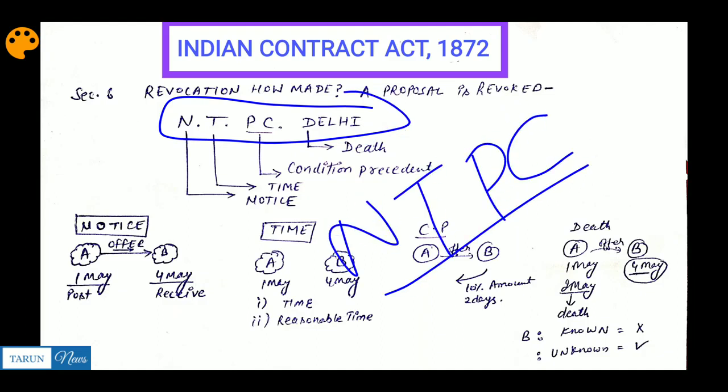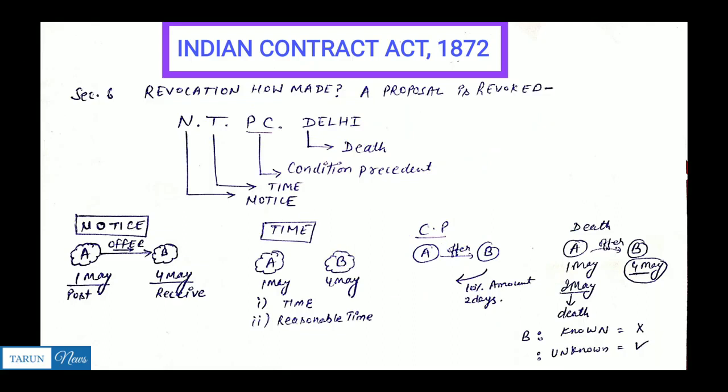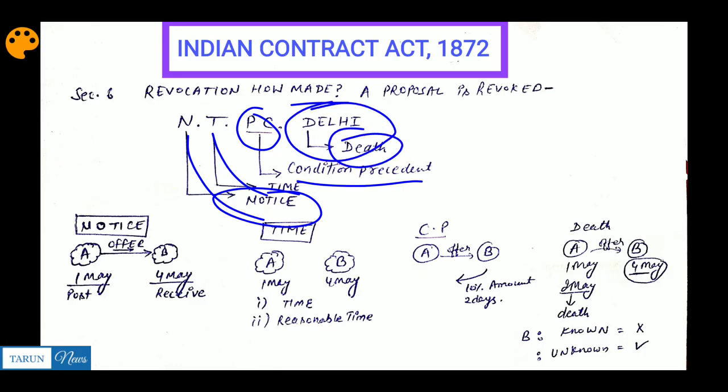NTPC - it's a PSU which means National Thermal Power Corporation, whose headquarter is in New Delhi. You can use this trick to remember the methods. N stands for Notice, T stands for Time, P and C can be interchanged - Condition Precedent, and Delhi stands for Death.